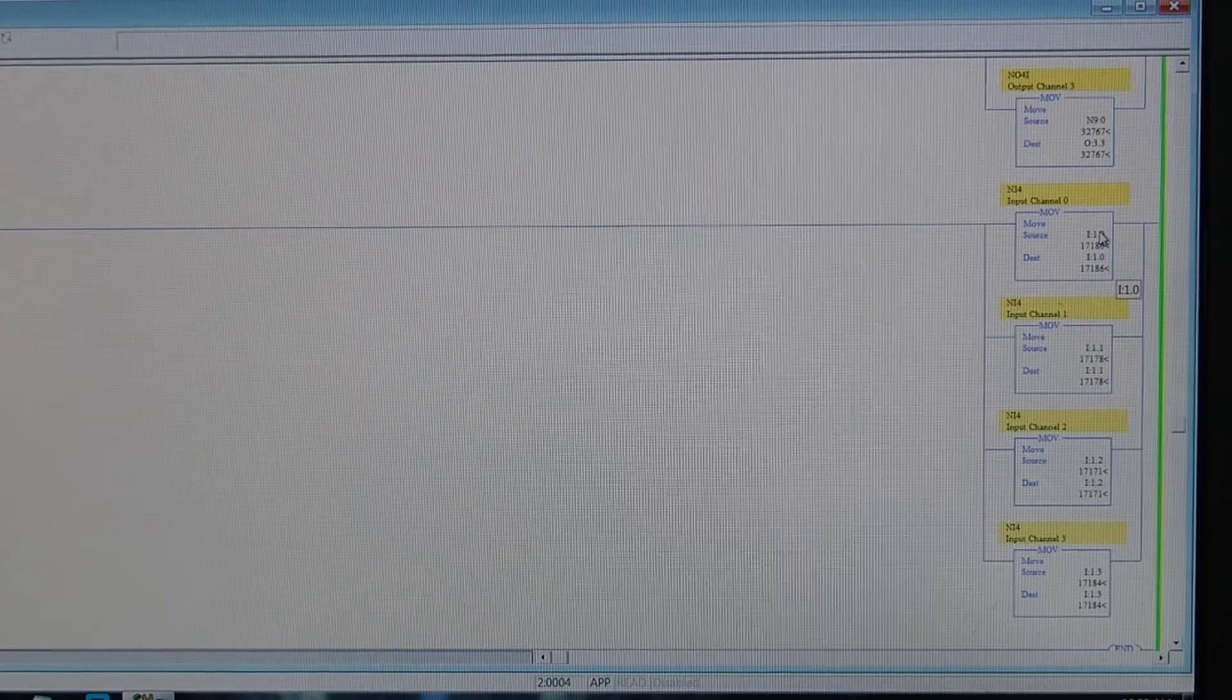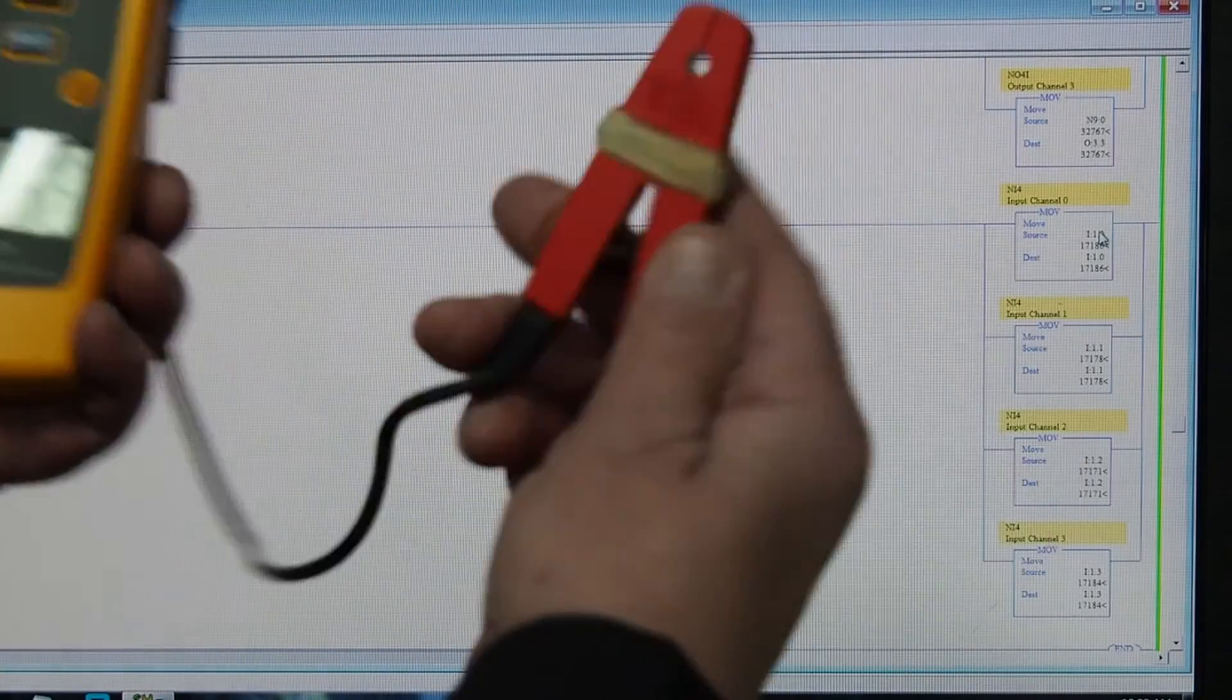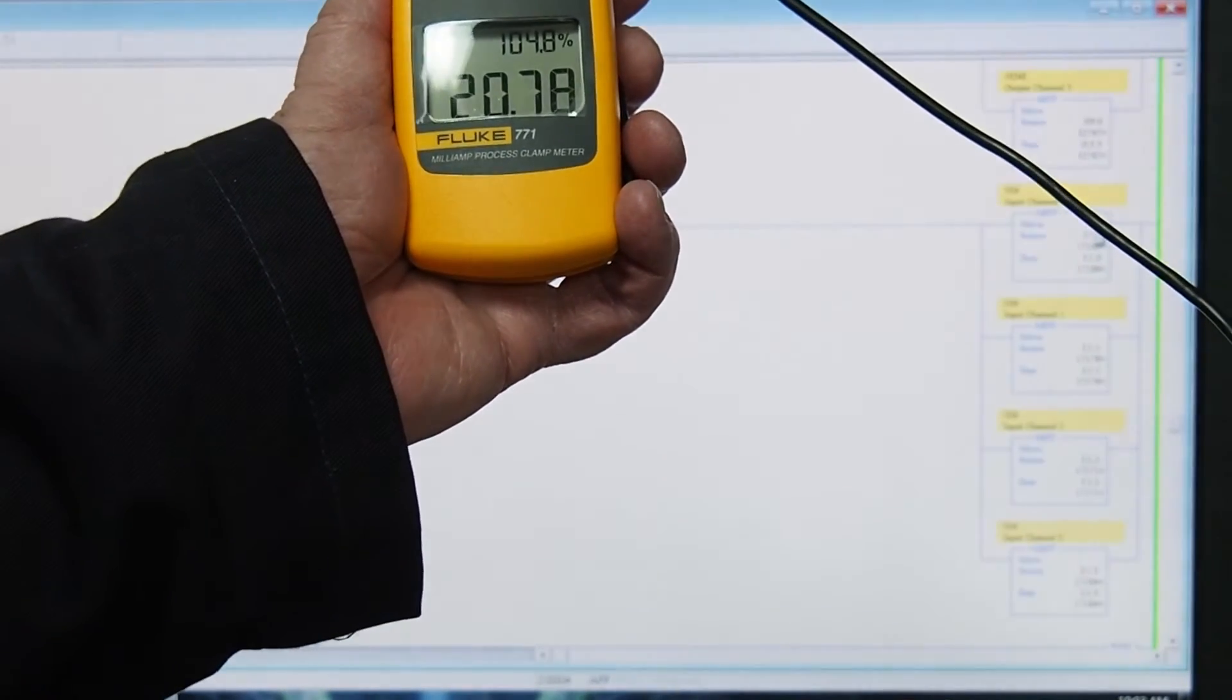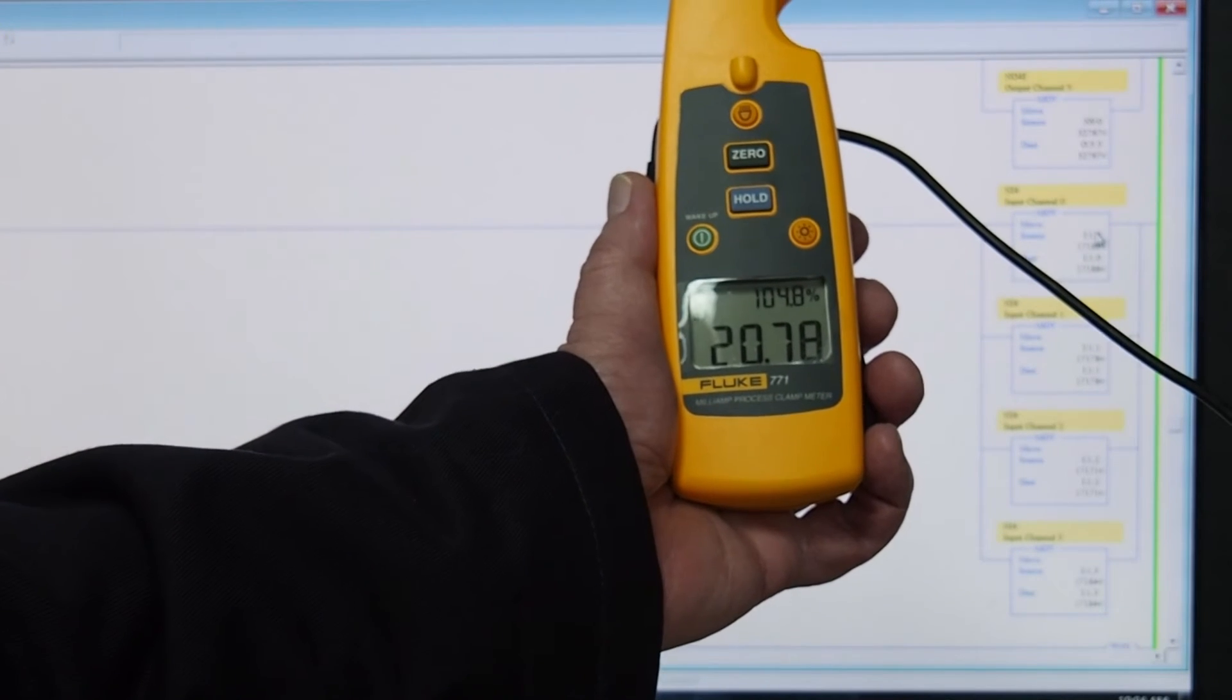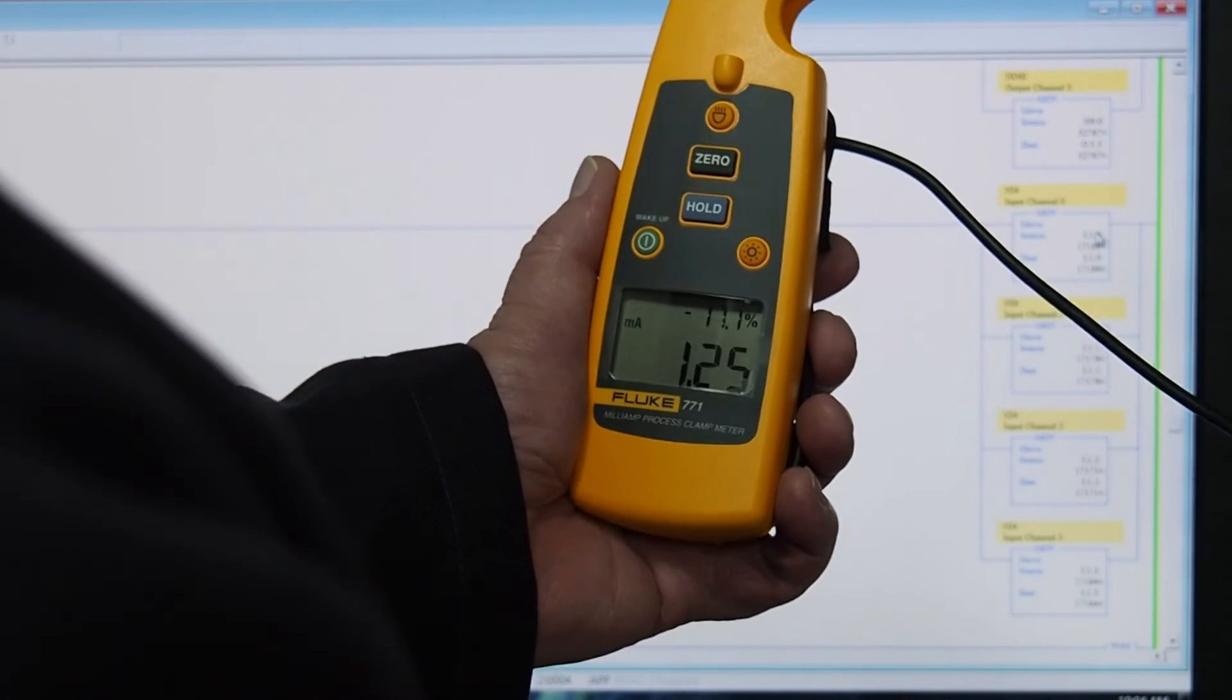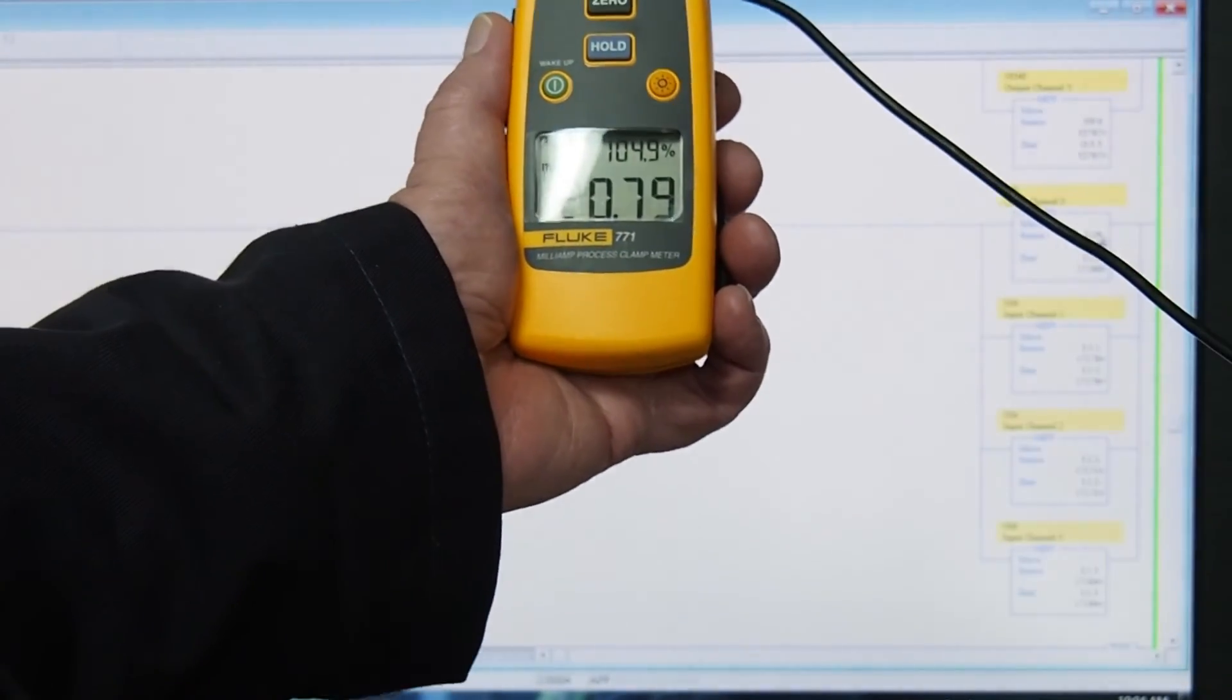And if we take a, I have a Fluke 771 analog meter, and put it on the right way. There's an arrow on it. There we are. I put it on to channel zero. There we go. 20.78 milliamps. Hopefully we can see that there is what it shows as the output on a zero to 21 milliamp module. So that's pretty close. And you can use this to check all of them. And they should all be pretty close. 20.79, channel two, and 20.79.